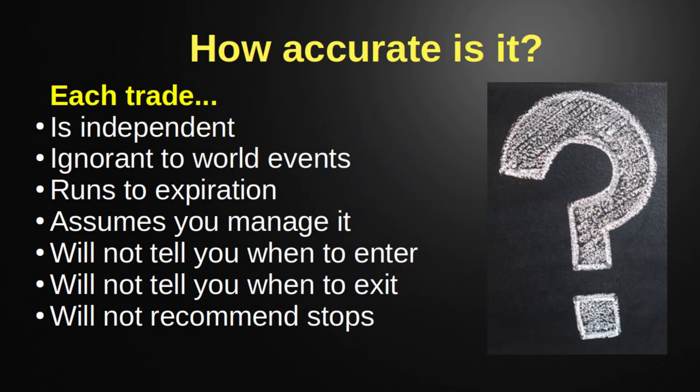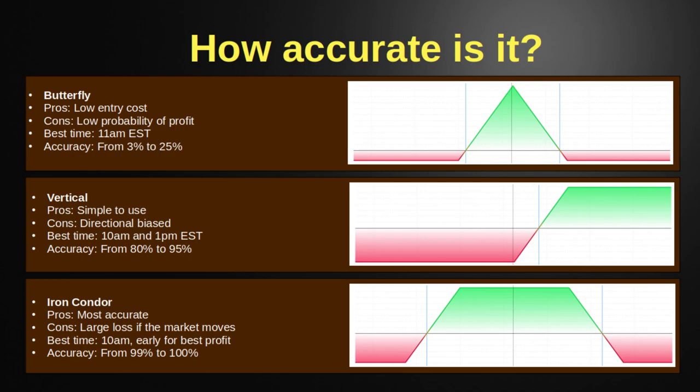We'll deep dive into numbers — actual money, how much you can make — but I want to highlight that each trade this system generates is completely independent and designed to run to expiration. When we talk about dollar amounts, we're talking about each trade running from the moment you put it on all the way to end-of-day expiration, and it assumes you manage the trade. It will not tell you when to enter, when to exit, or recommend stops. At its core, the system generates three types of trades: a butterfly, a vertical (either put credit spread or call credit spread), or an iron condor — each with different fundamentals in terms of best entry time, risk to reward, and potential profit.